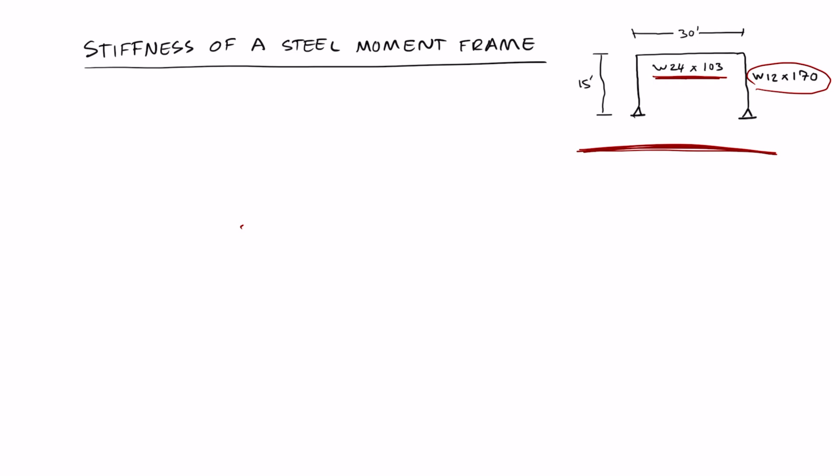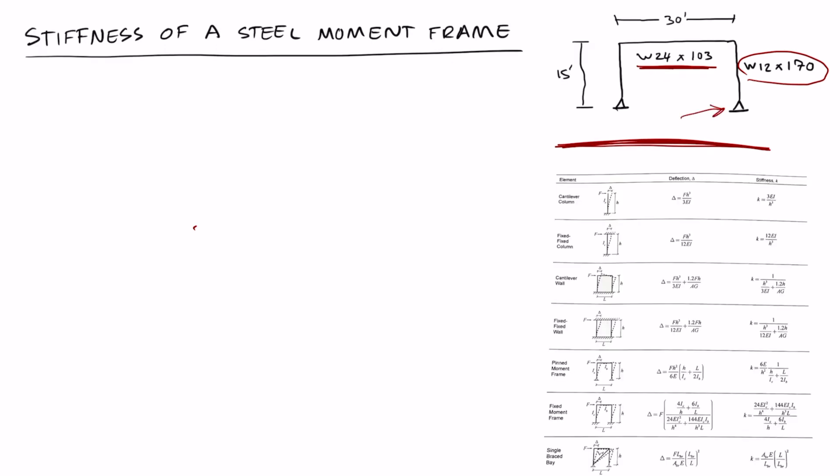We have a pinned moment frame. You could tell because there are two pins here. So if you go to the pinned moment frame, here's the stiffness equation. It's equal to k equals six times modulus of elasticity over h cubed times one over h over I_c plus L over 2 I_b.